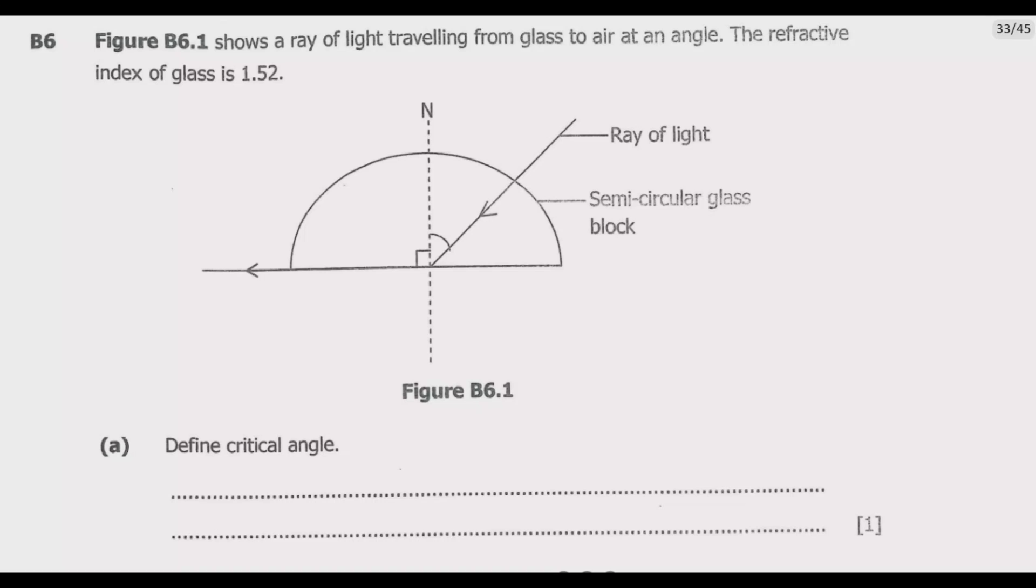Question A: Define critical angle. It's important that we understand what the critical angle is. When we are talking about the critical angle, we are referring to an angle of incidence beyond which rays of light passing through a denser medium to the surface of a less dense medium are no longer refracted but totally reflected.